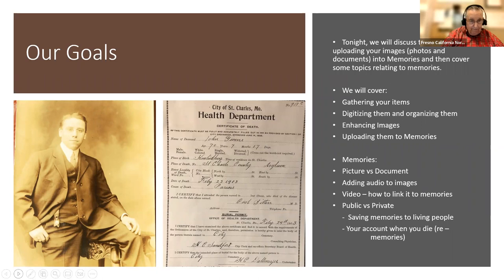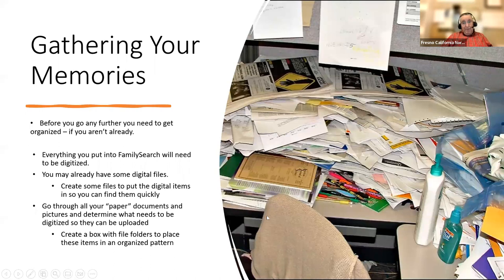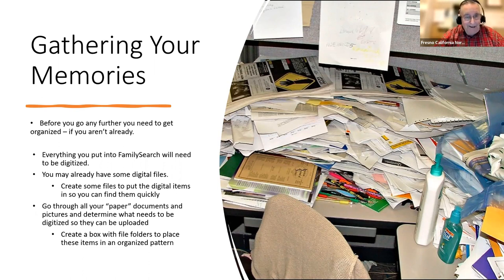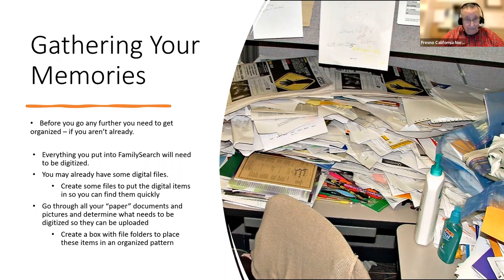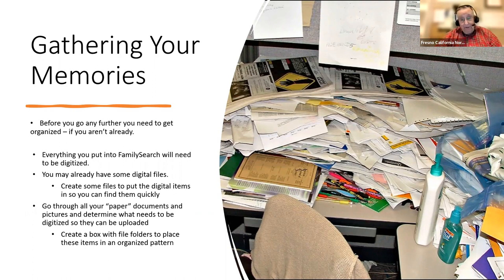Gathering your memories — for many of us, this is unfortunately what our genealogy looks like, a bit chaotic. Everything that you put into FamilySearch has to be digitized. We have to get some order out of the chaos. We need to create digital images, organize those images so we can find them quickly, and if we want to keep paper records, take them after they've been digitized and put them in a box or filing system with a pattern so you can find them.